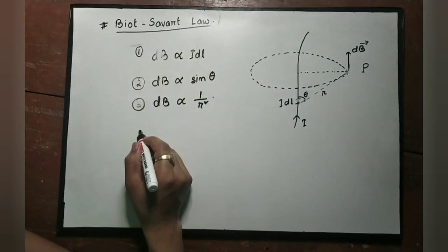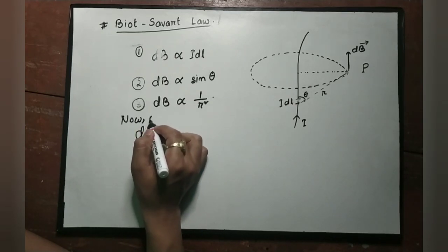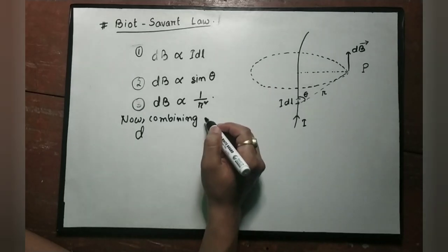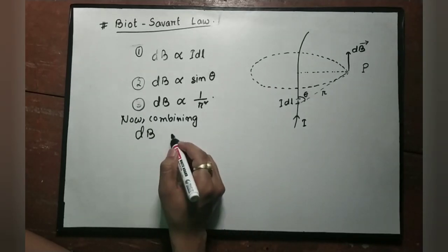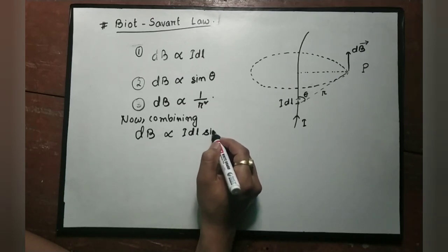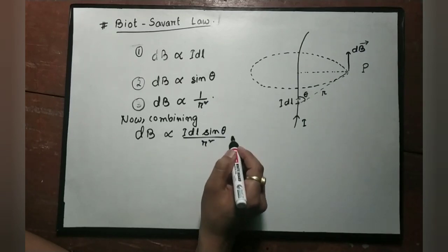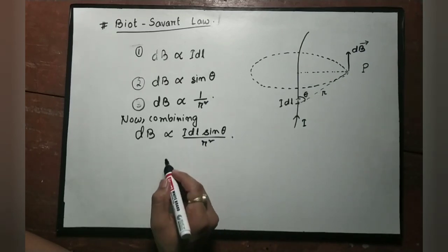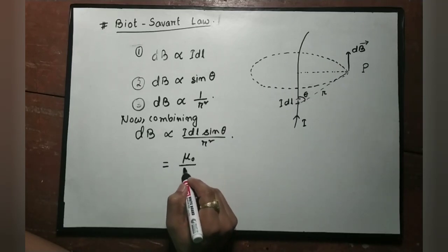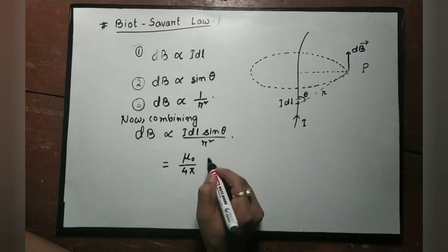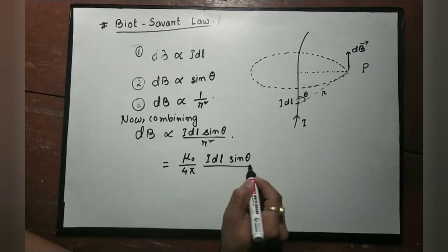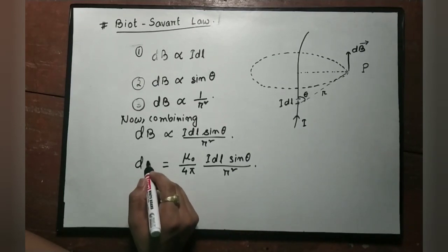The magnetic field is inversely proportional to the distance squared. Combining all three relationships, we get dB is proportional to I dl sin theta divided by r squared. With the proportionality constant mu naught by four pi, dB equals mu naught by four pi times I dl sin theta divided by r squared.